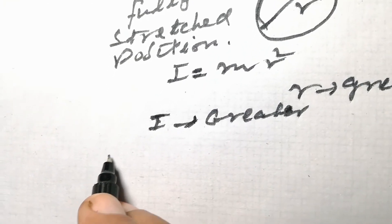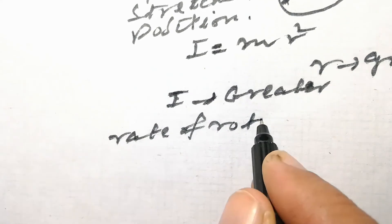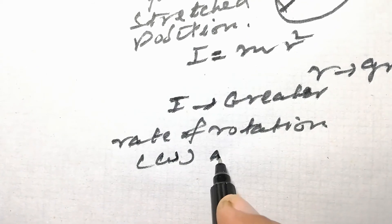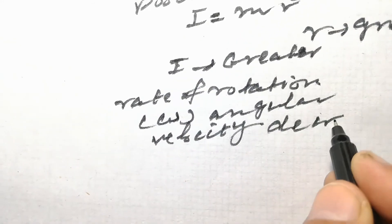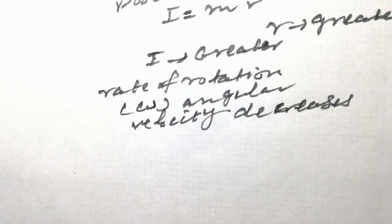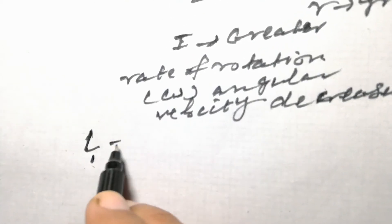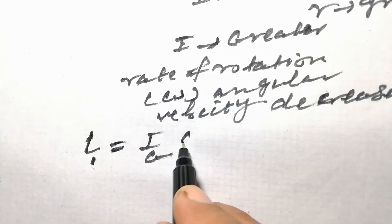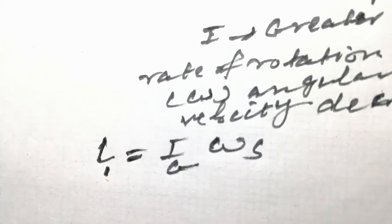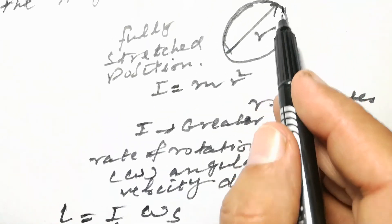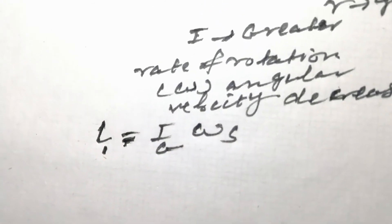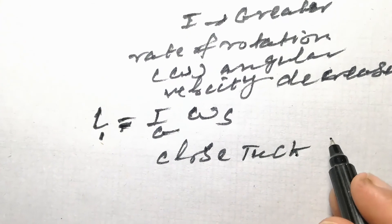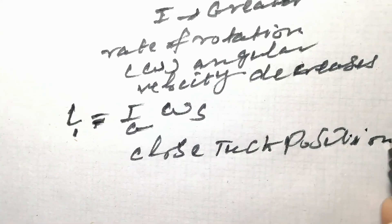So while moving upward: L₁ = I_greater × ω_smaller. When the diver starts moving downward, he moves into a close tuck position — arms and legs folded. In this close tuck position, R is smaller, so the moment of inertia I is also smaller, and consequently the angular velocity ω increases.